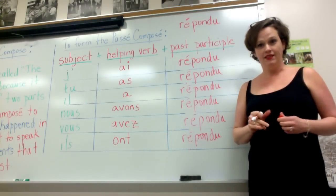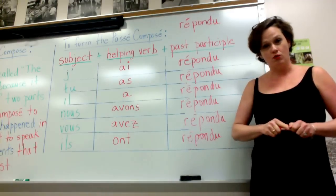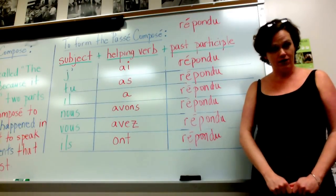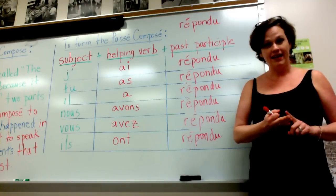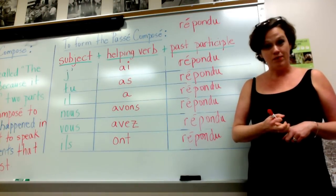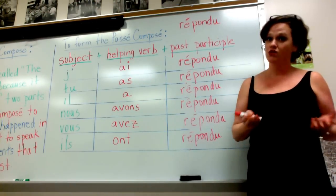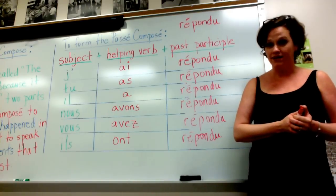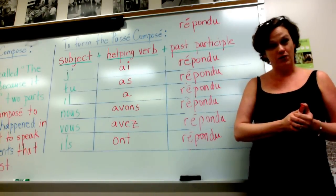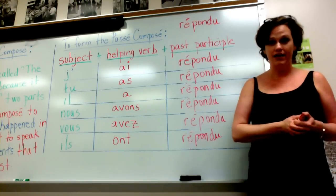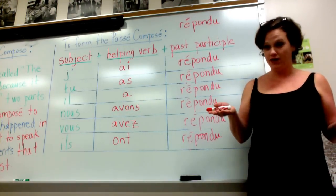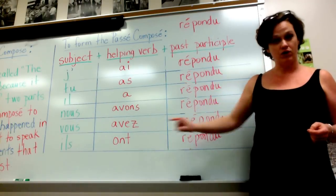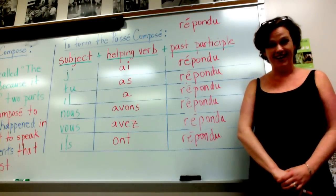So there you have it. Now you know how to use the passé composé with regular verbs that end in ER, IR, and RE. Remember, using the passé composé is so much simpler than using the present tense. And the reason why is because you really only have to know how to conjugate one verb. Which one is that? That's your helping verb, the verb avoir.